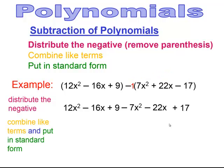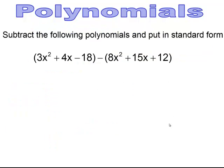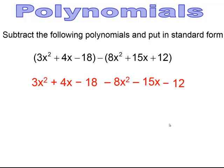Now combine like terms. We have 12x² − 7x² which gives 5x². Then −16x − 22x gives −38x. And 9 + 17 gives +26. So the result is 5x² − 38x + 26. Pause and try. Removing the first polynomial's parentheses and distributing the negative to the second, then combining like terms, gives −5x² − 11x − 30.